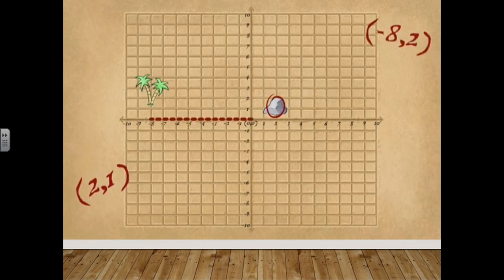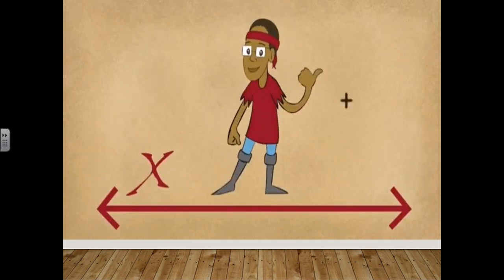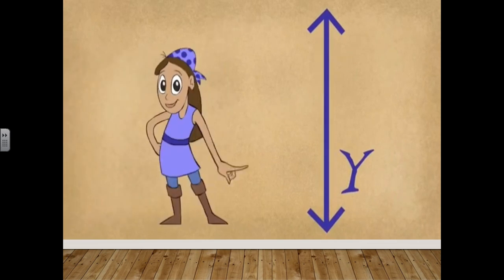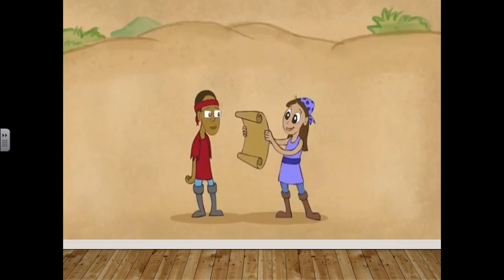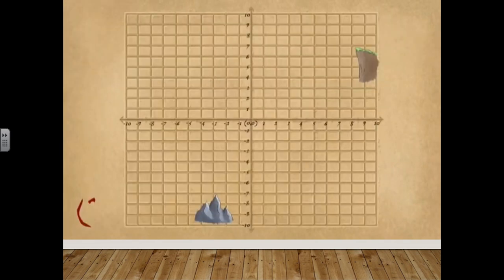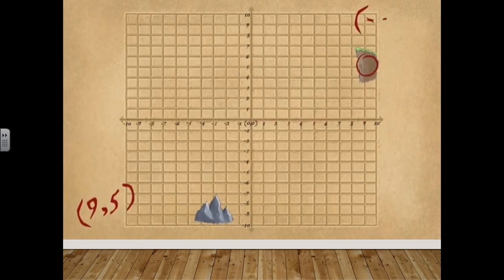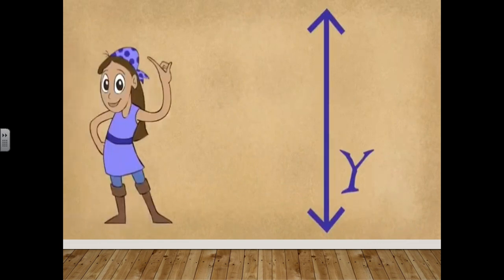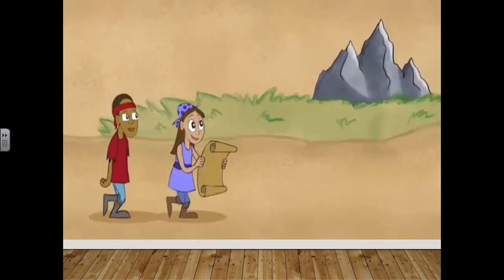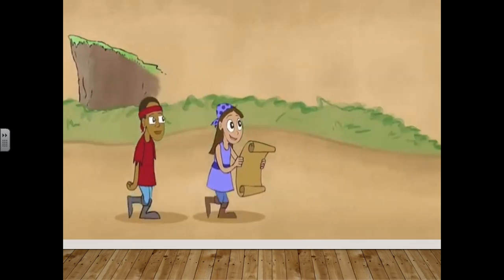Positive two, go left eight, up two — that's what we do. Hold the x-axis, count left or right; hold the y-axis, count up or down — that's how our coordinate point is found. To plot the coordinates nine, five: go right nine, up five to where you arrive. Four, negative three, negative nine: go left three, down nine where they intertwine.